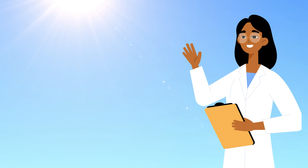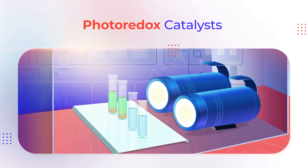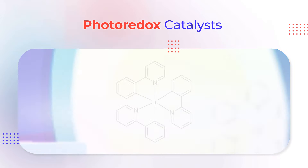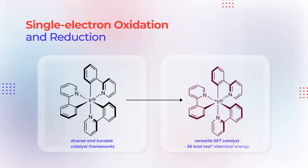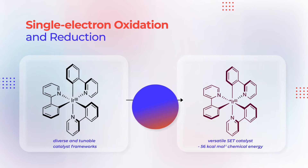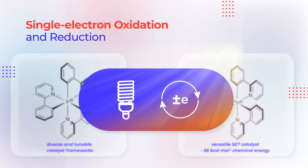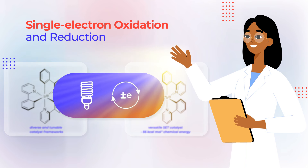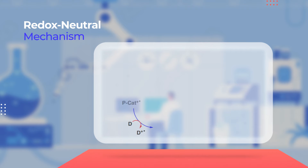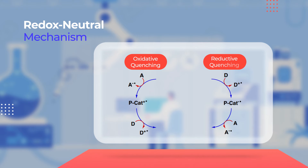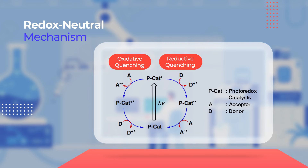In recent years, photoredox catalysis has come to the forefront in organic chemistry as a powerful strategy for the activation of small molecules. Visible light photoredox catalysts can perform single electron oxidation and reduction when exposed to visible light. This has recently received a lot of attention due to its potential for use as a solar energy source. The reaction cycle involves both oxidative and reductive pathways, thus showing a redox-neutral mechanism overall.